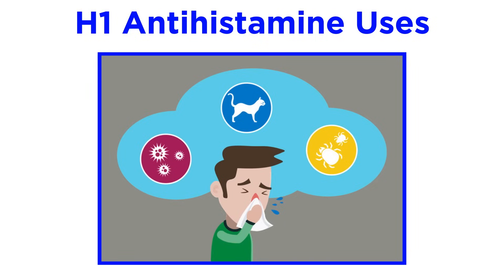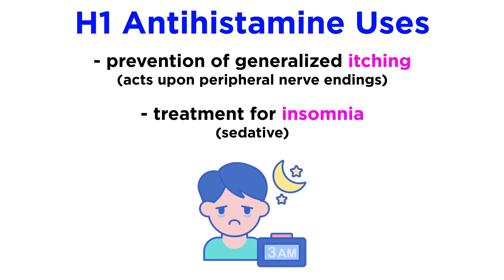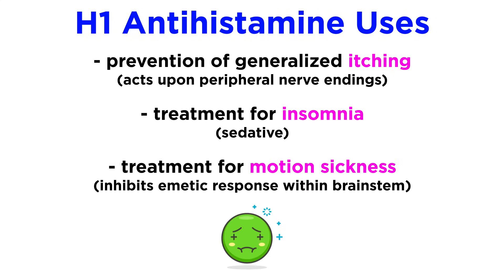In addition to preventing allergies, H1 antihistamines can be used to prevent generalized itching by acting on peripheral nerve endings, insomnia through sedative effects in the nervous system, and motion sickness due to inhibition of the emetic or nausea-vomiting response within the brain stem.